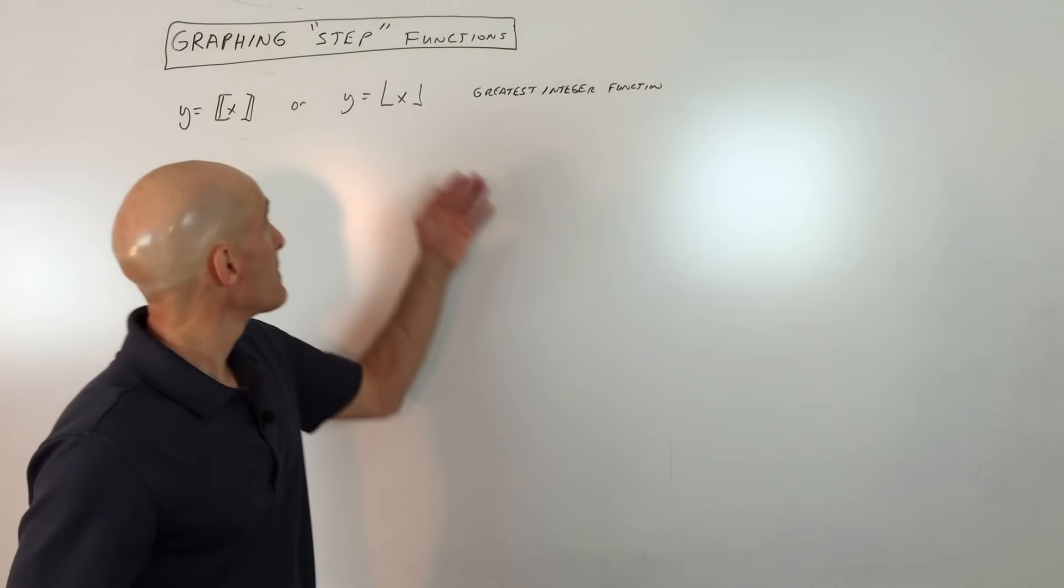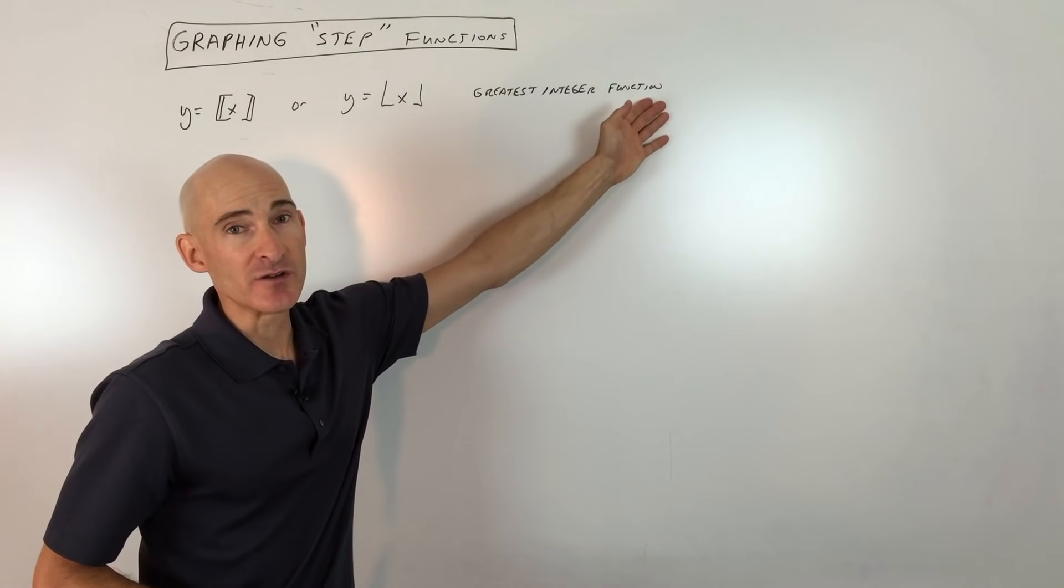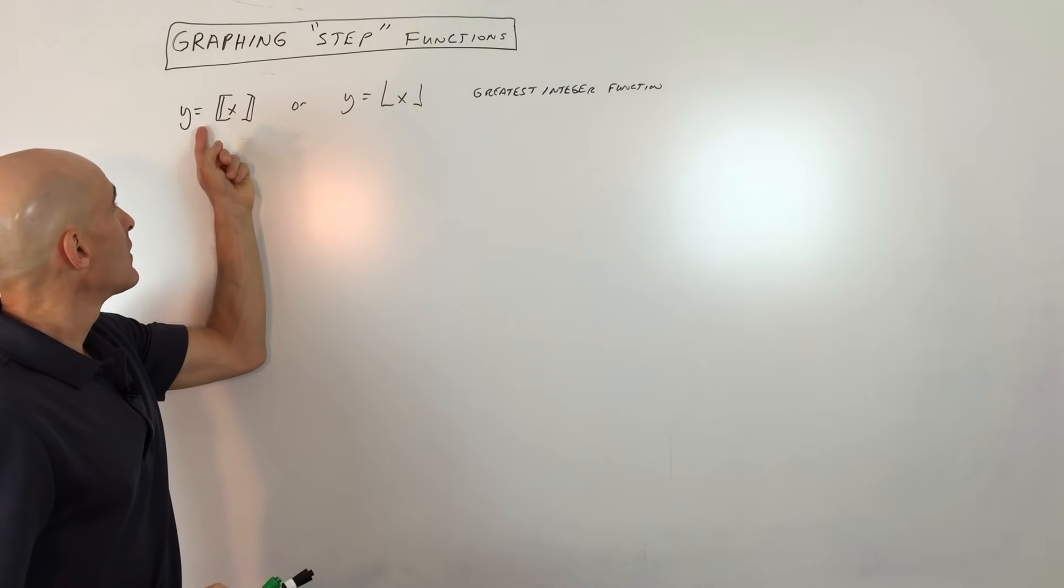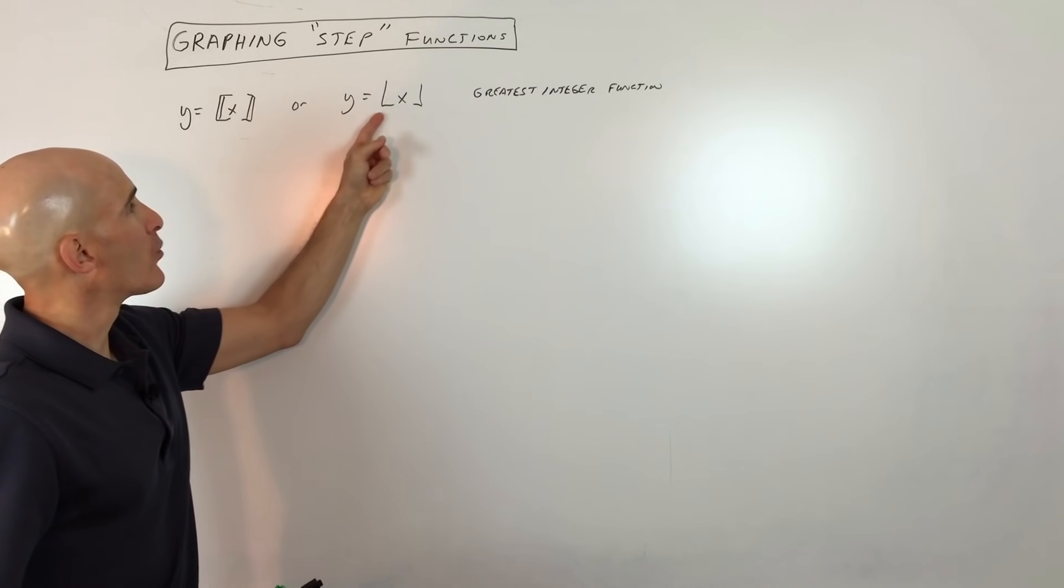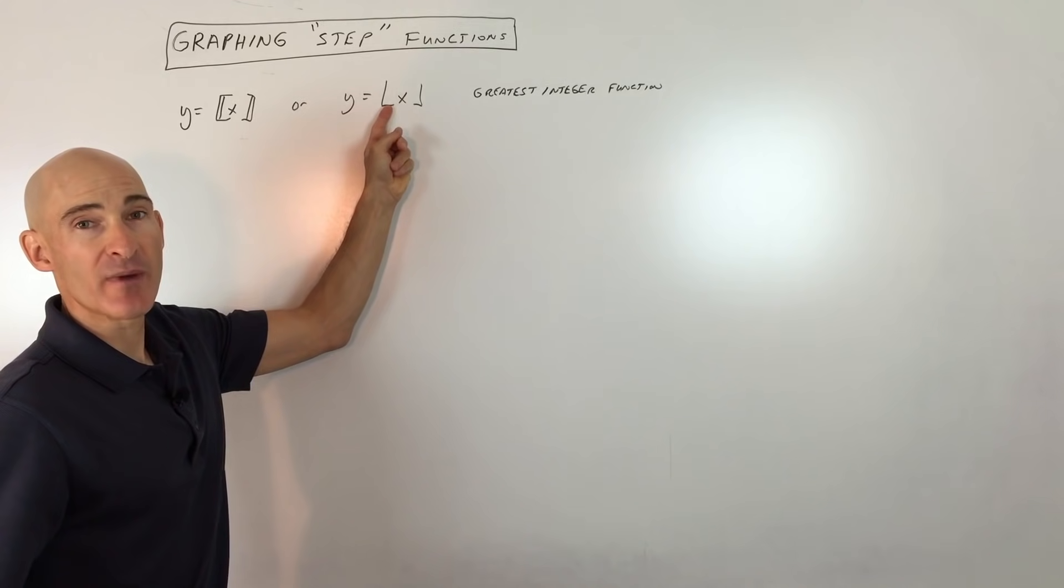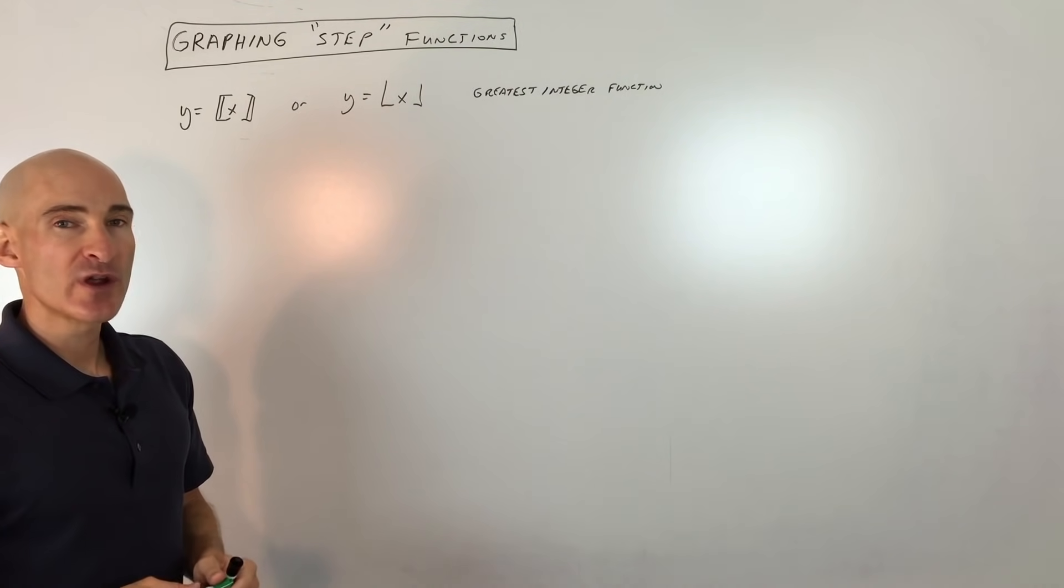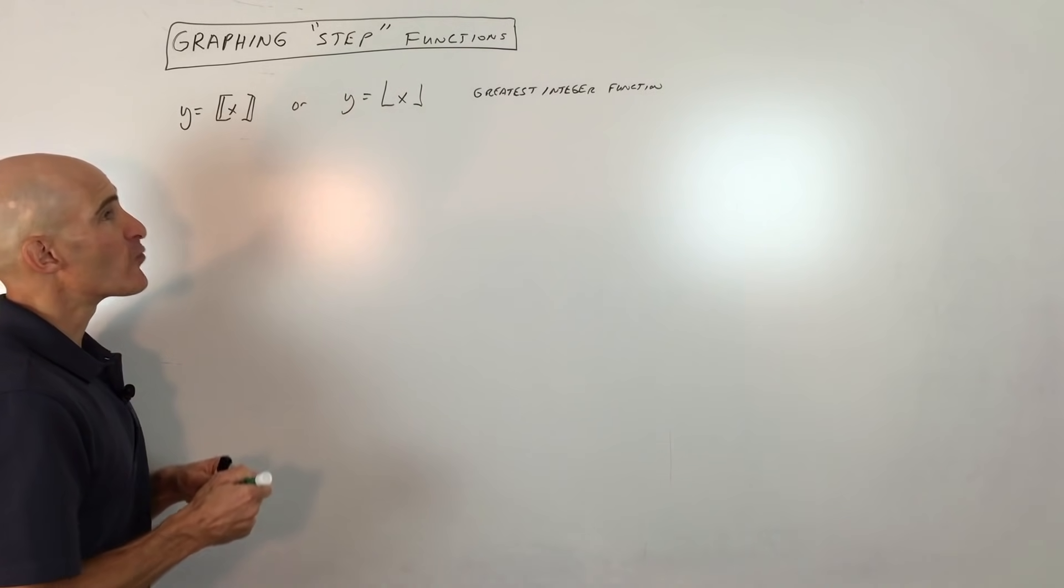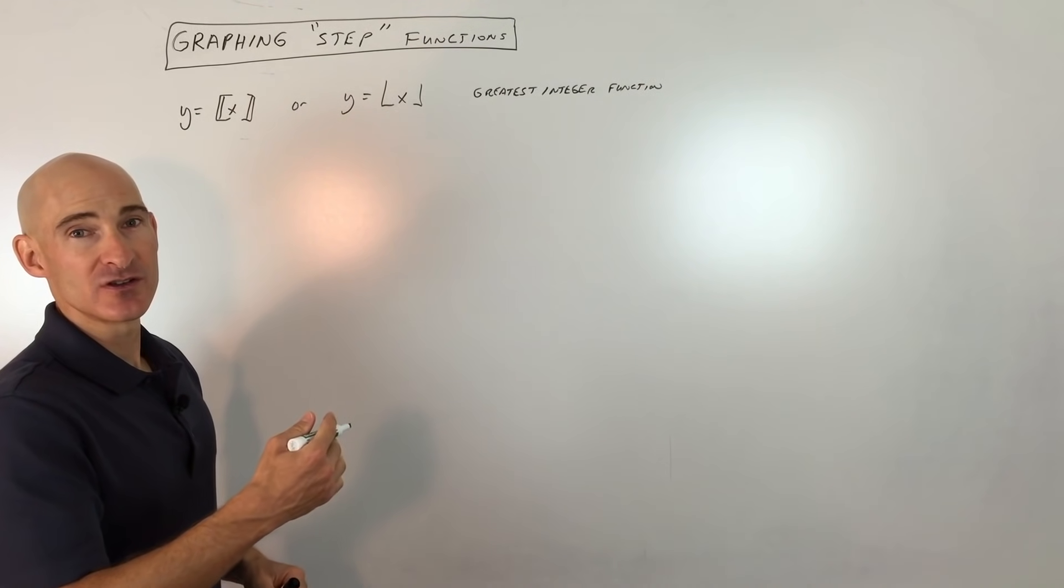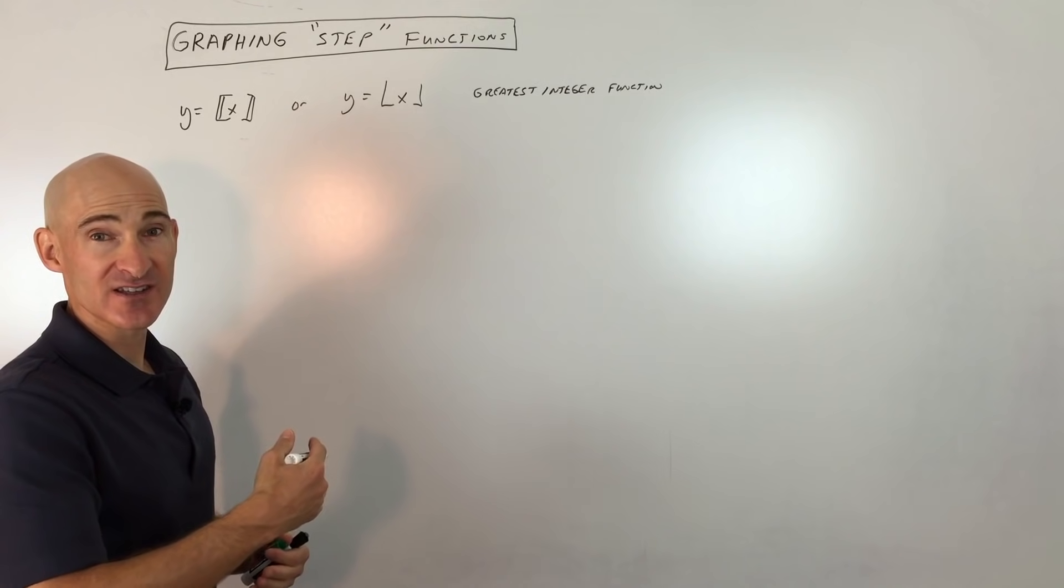These are oftentimes referred to as the greatest integer function, and it can be represented by this symbol here, or this symbol here. Notice the little bars at the bottom. Sometimes called a floor function. And basically what a greatest integer function does is it rounds down to the next greatest integer.